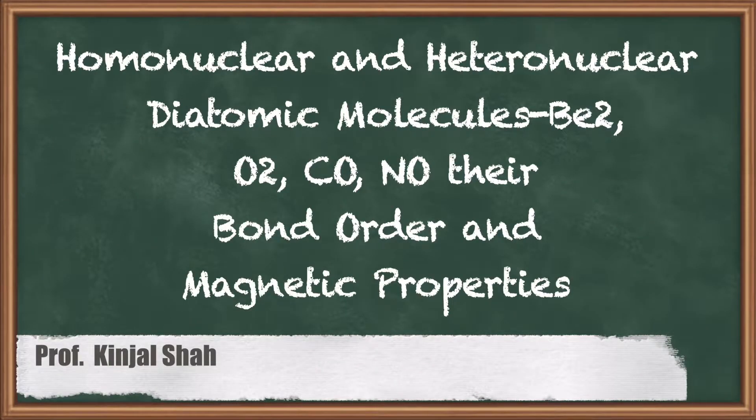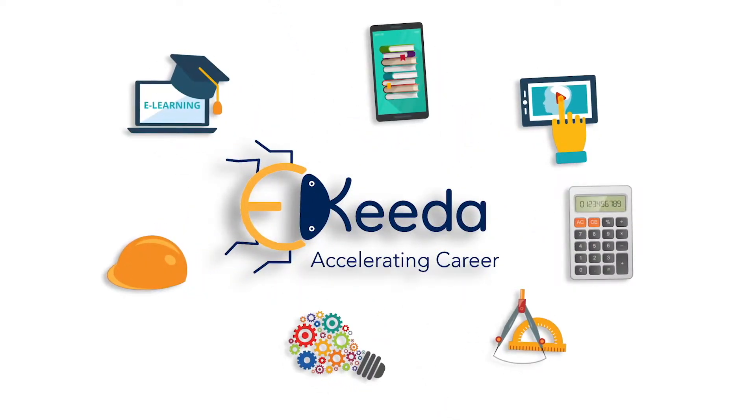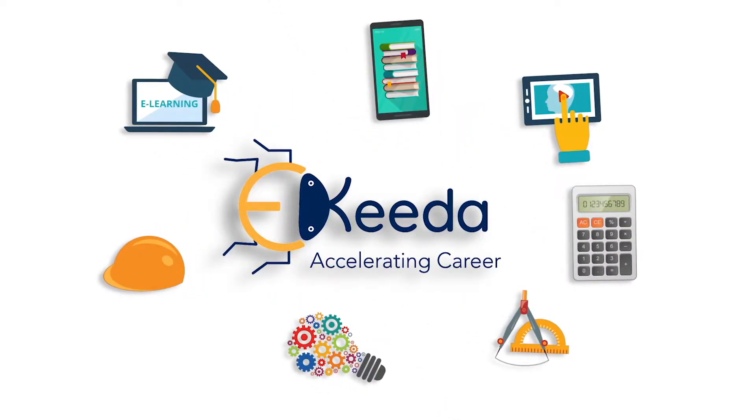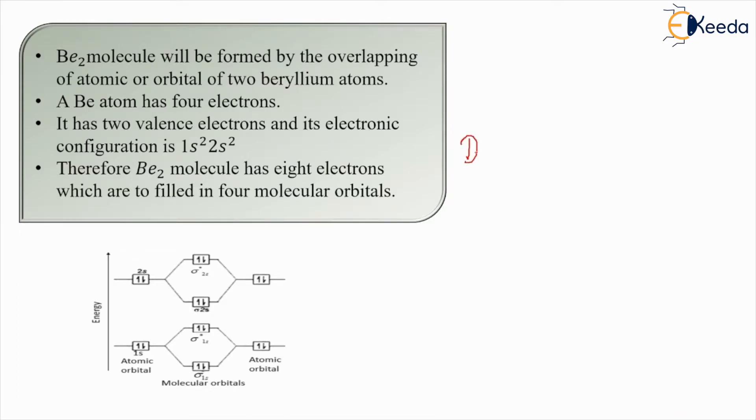Hello students, in today's class we are going to study about the homonuclear and heteronuclear diatomic molecules. First let us see what are diatomic molecules. Diatomic molecule - let's first focus on what this means. Di means two, atomic means atoms, and when these two atoms combine to give us a molecule